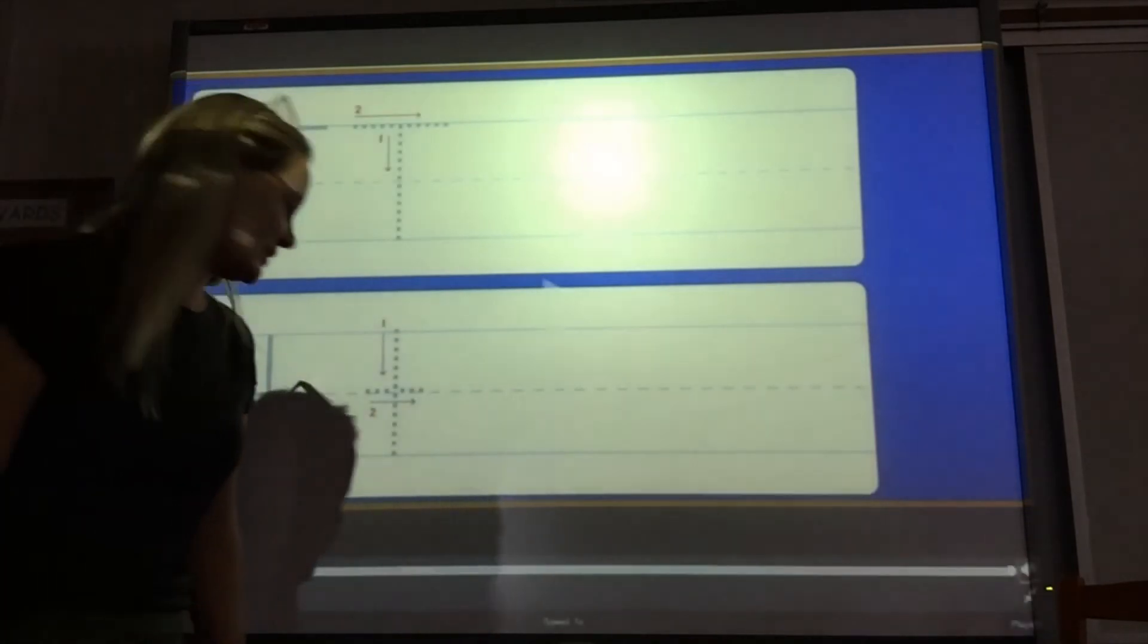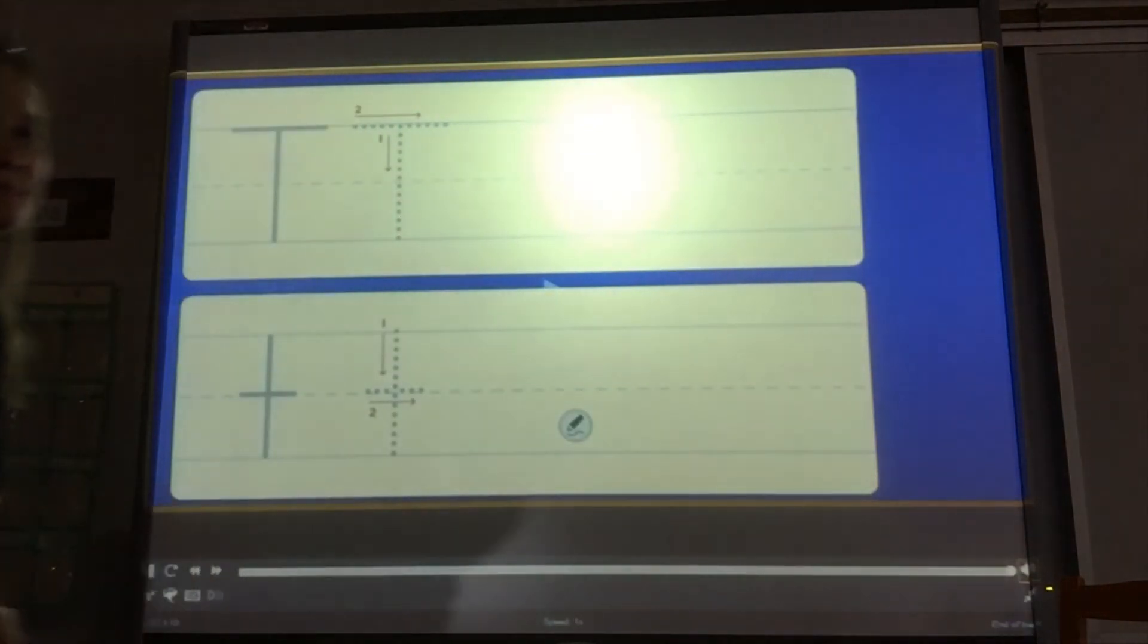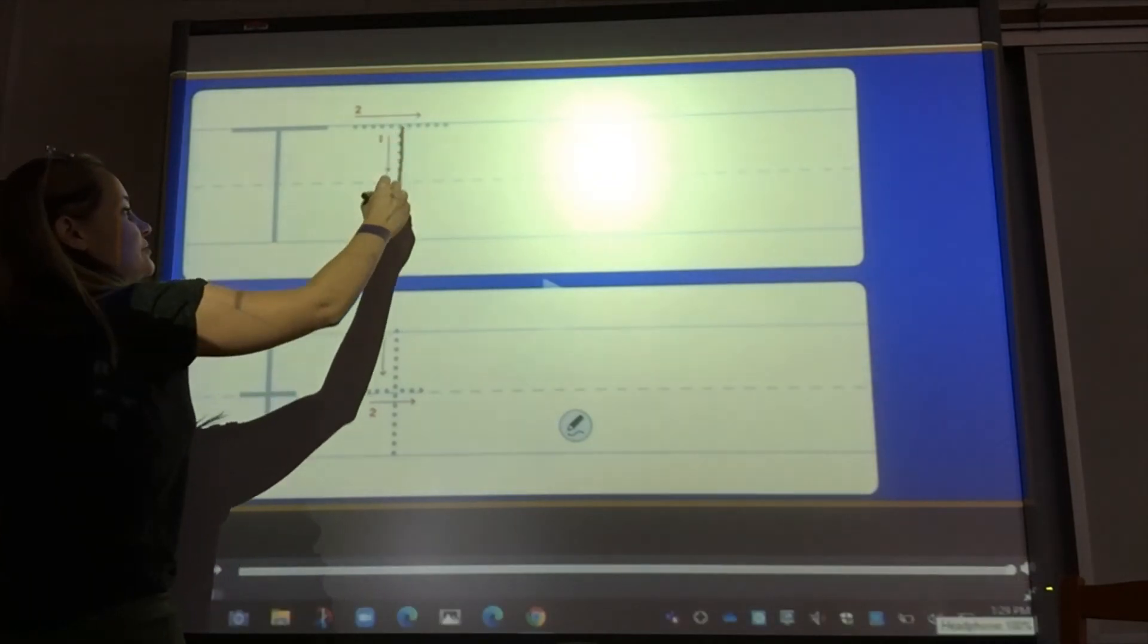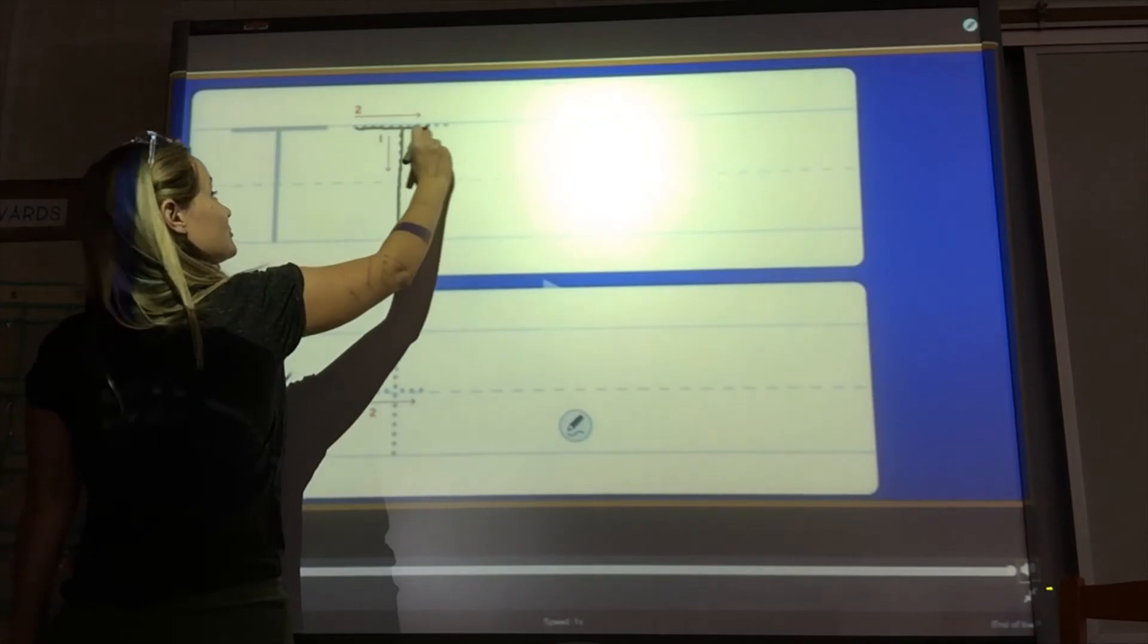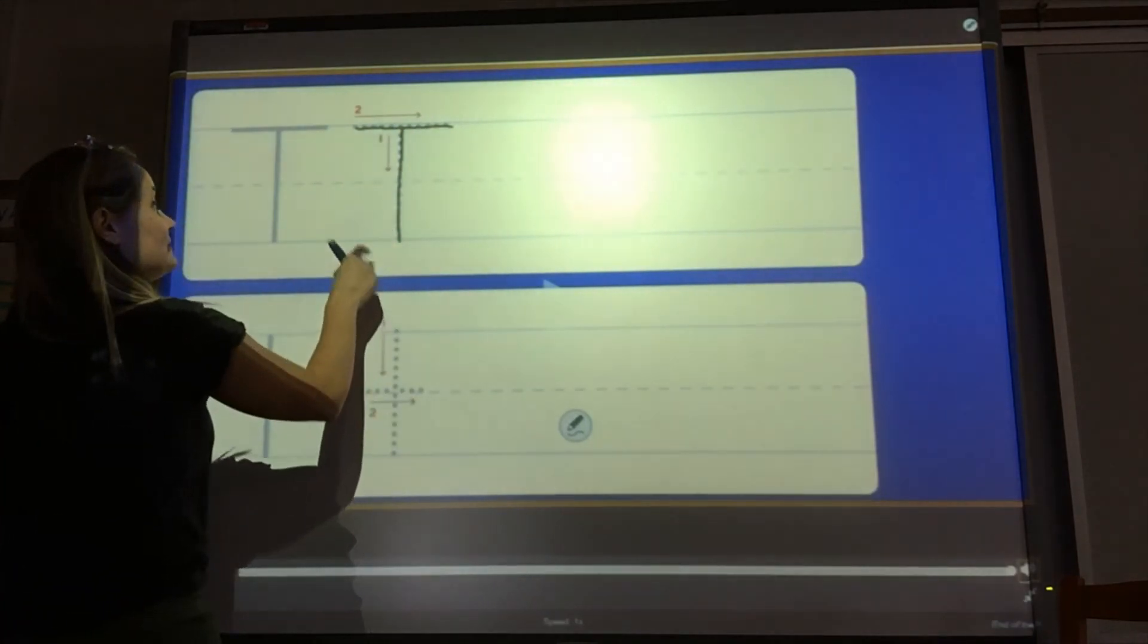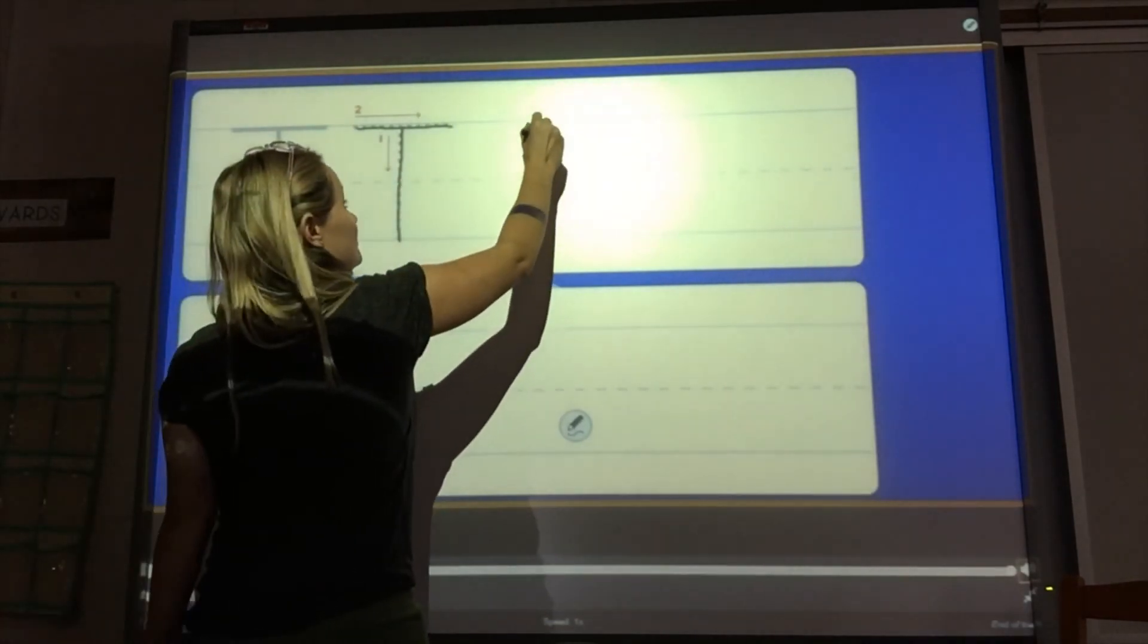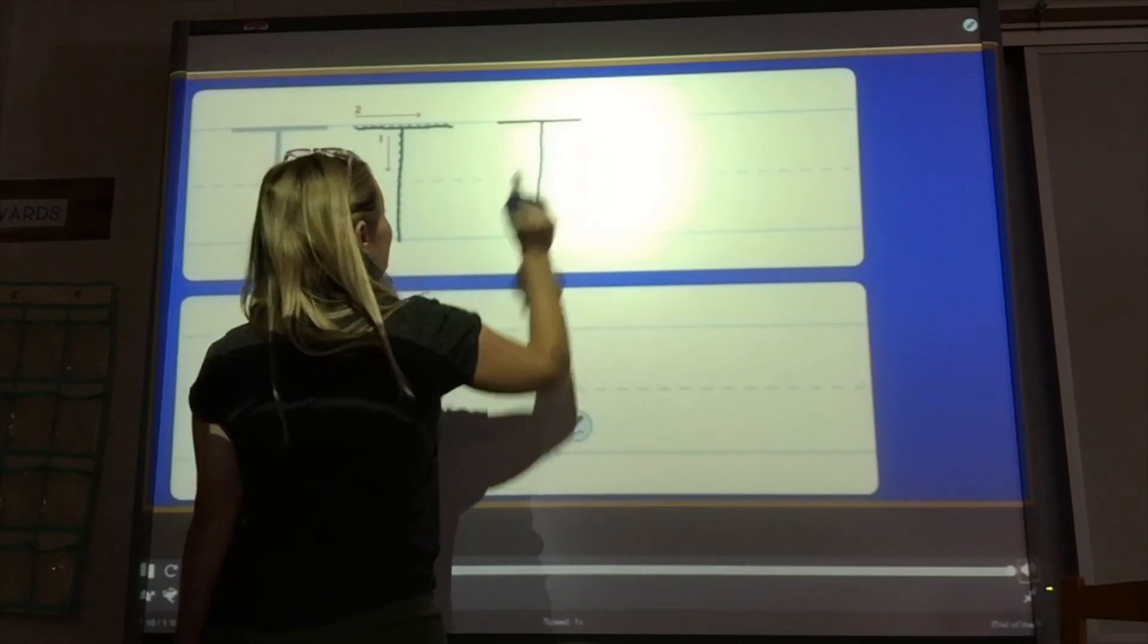Let's practice a little bit. Take your pointer finger and trace your screen with me. Straight line down, go back to the top, straight line across. Step one, step two, step one, step two. Let's do it again. Straight line down, back to the top, across.